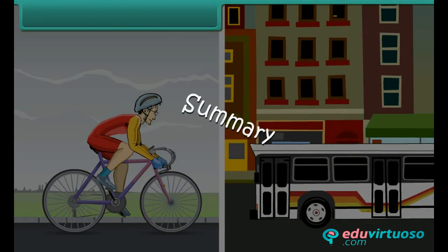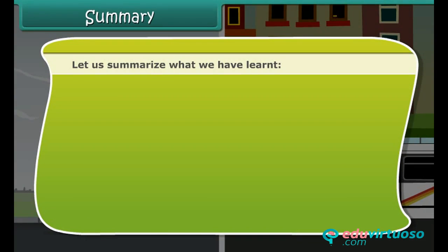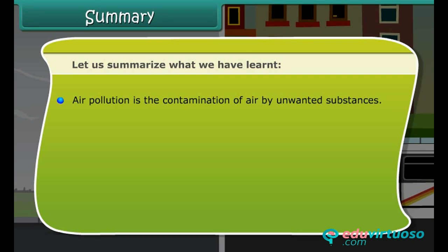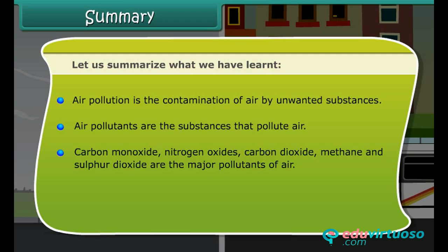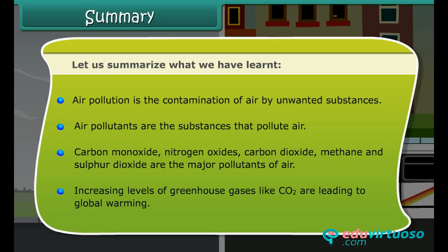Let us summarize what we have learned. Air pollution is the contamination of air by unwanted substances. Air pollutants are the substances that pollute air. Carbon monoxide, nitrogen oxides, carbon dioxide, methane, and sulfur dioxide are the major pollutants of air. Increasing levels of greenhouse gases like CO2 are leading to global warming.